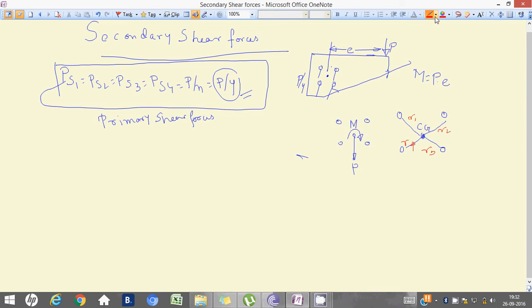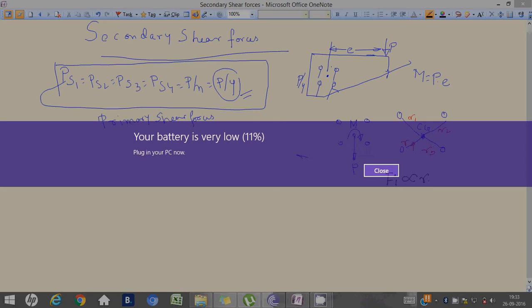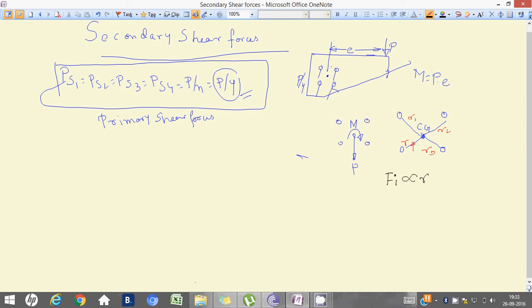We can write that the assumption that we are making if we are generalizing: suppose Fi is directly proportional to Ri. This Fi is actually secondary shear force which will be at a certain distance R1 for rivet 1 and is at a perpendicular distance from the CG.